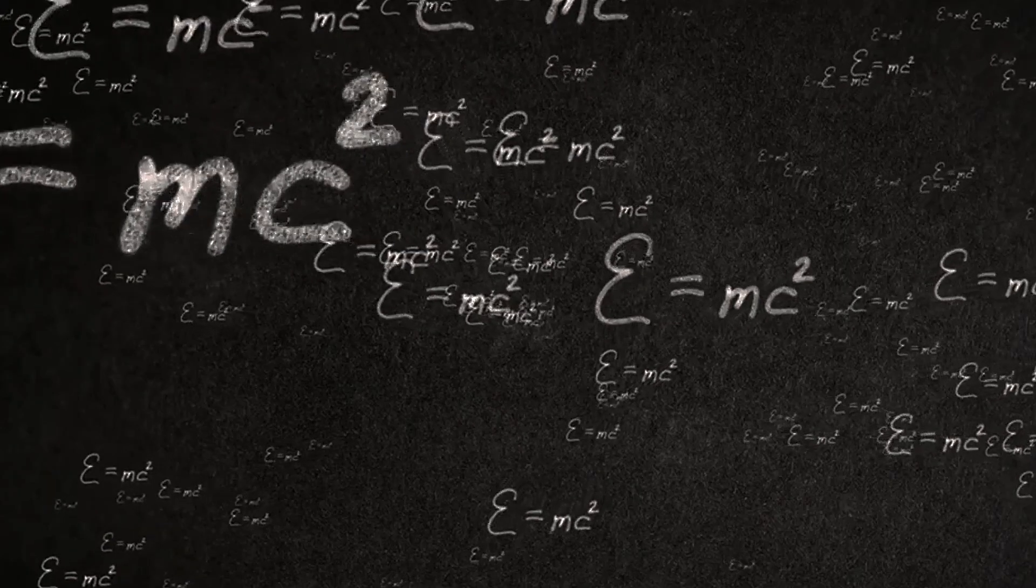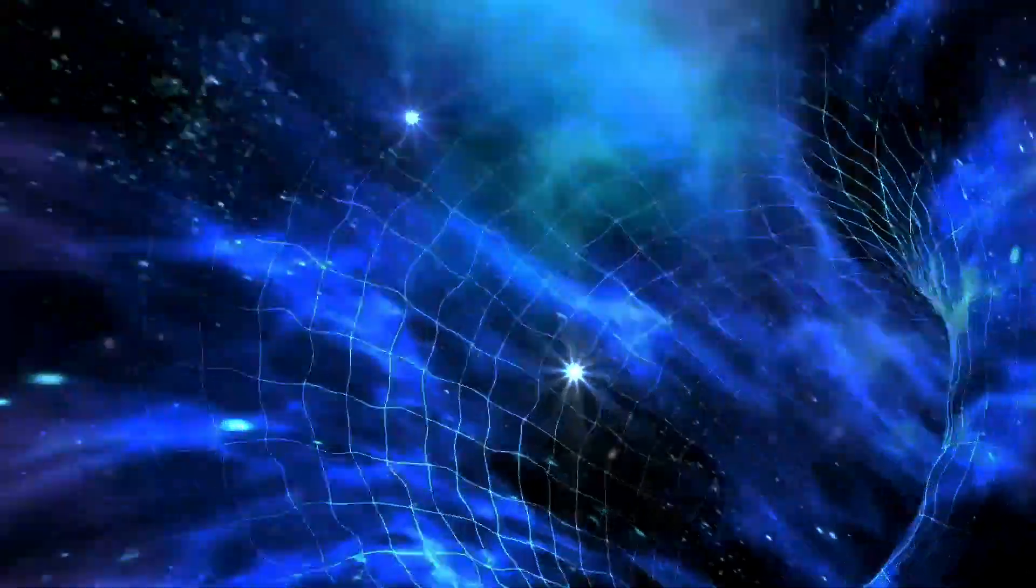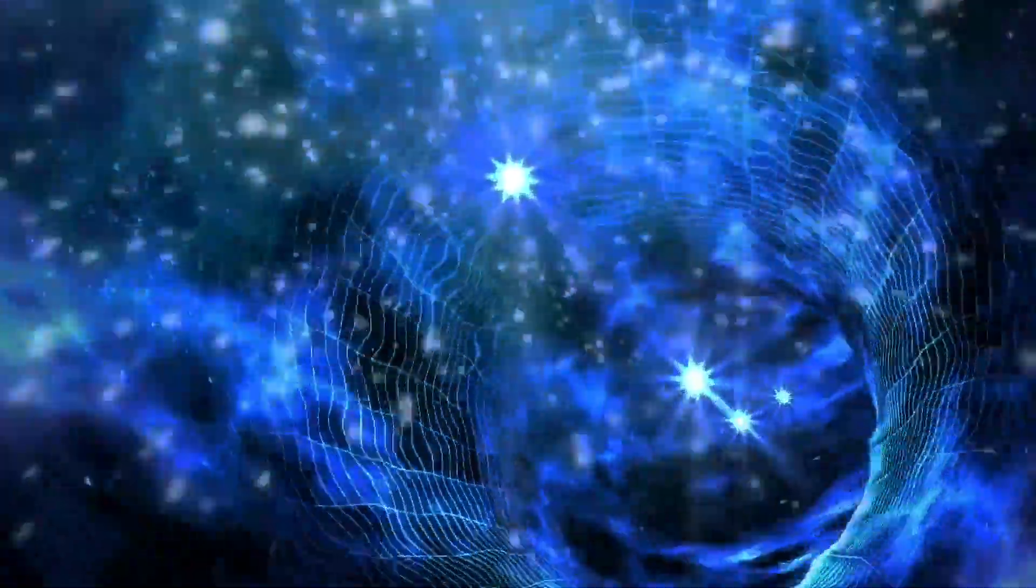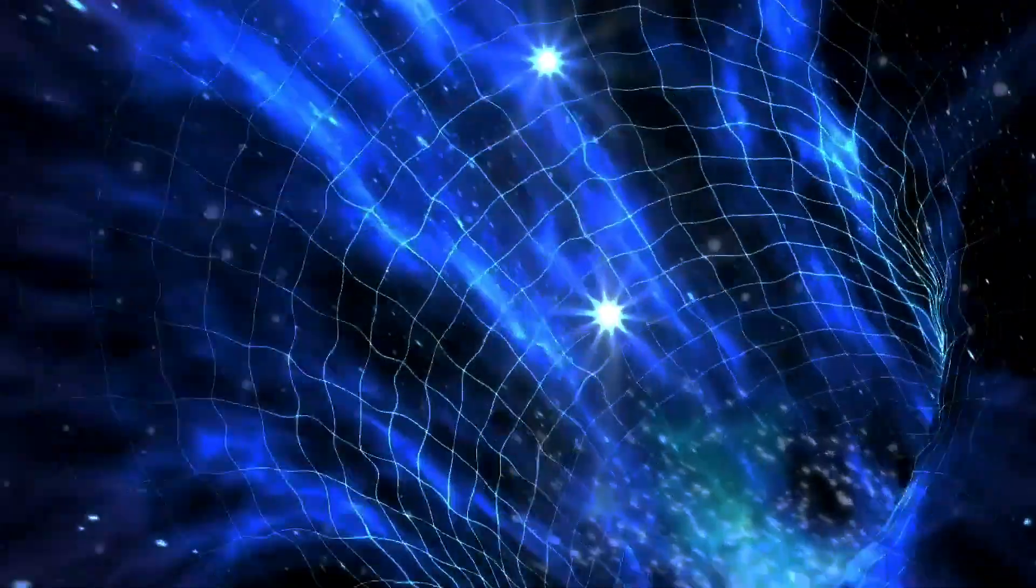One intriguing possibility is that dark energy could transform into matter. This may sound like science fiction, but it's rooted in the laws of physics. Einstein's E=MC² tells us that energy and mass are interchangeable. If dark energy can somehow convert itself into matter, it would be a way for the universe to effectively grow its own mass. Imagine a vast ocean of dark energy, constantly churning and changing. Within this ocean, pockets of dark energy might be converting themselves into particles, adding to the universe's overall mass. It's like the universe is running a cosmic alchemy experiment, transforming one fundamental ingredient into another.